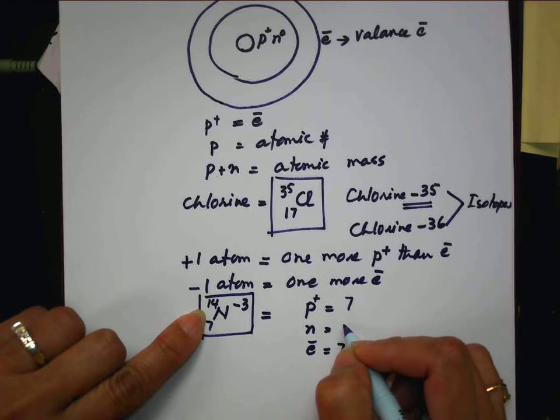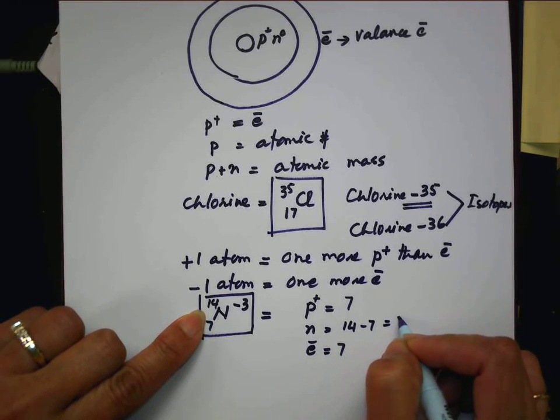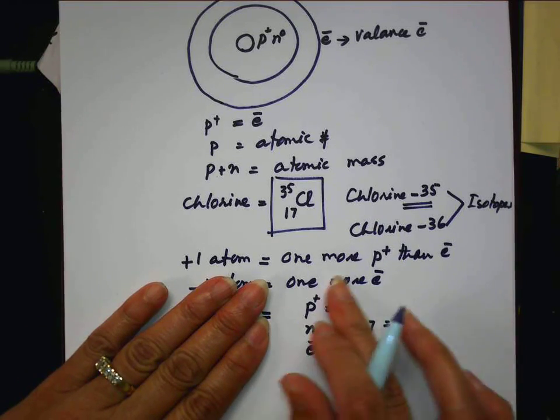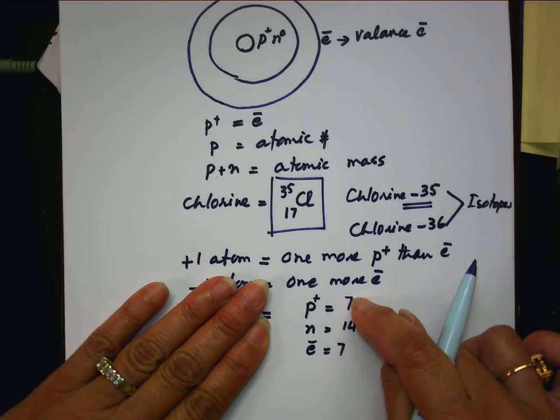And electron will be seven. How many neutrons? Fourteen minus seven. Seven. But this is, this one is a neutral atom. Because electron and protons are the same.